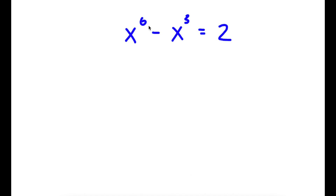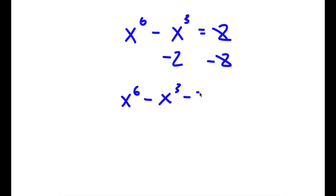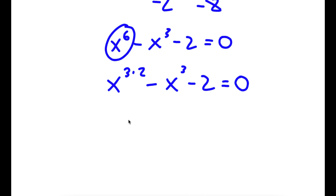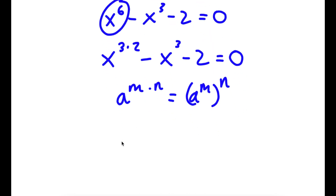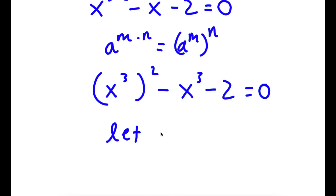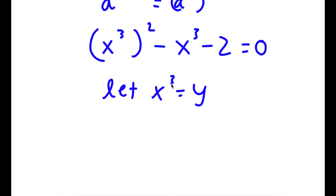In this problem, I have x to the power of 6 minus x to the power of 3 is equal to 2. I subtract 2 from both sides: x to the power of 6 minus x to the power of 3 minus 2 equals 0. I rewrite x to the power of 6 as x to the power of 3 squared, using the rule a to the m times n equals a to the m to the n. Then I let y equal x to the power of 3, giving y squared minus y minus 2 equals 0.